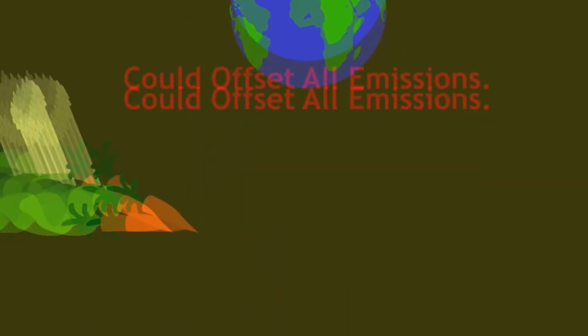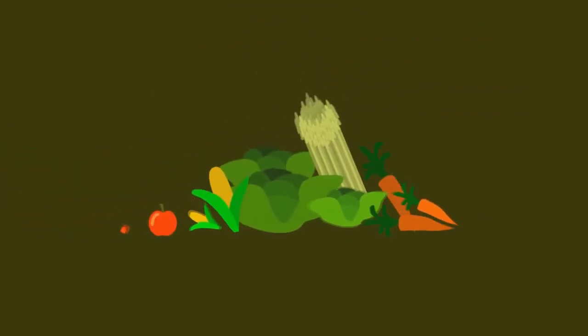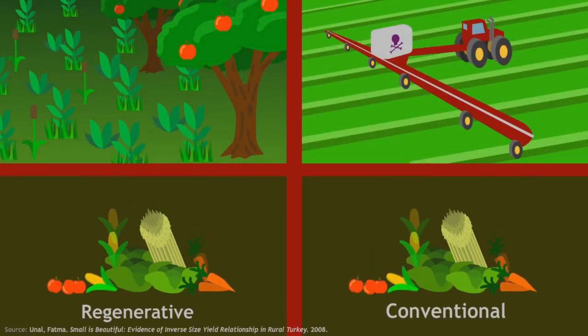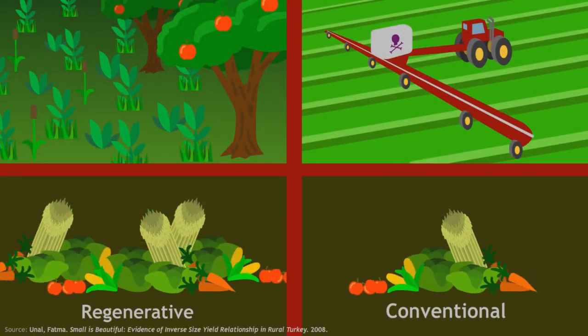We could begin drawdown, like right now, but we'd sacrifice agricultural productivity, right? No. Actually, these methods can be as productive or more productive than chemical-based agriculture.